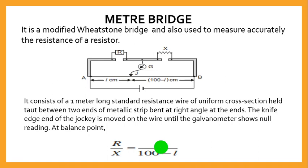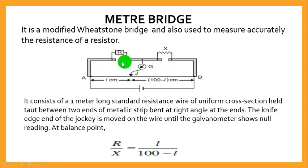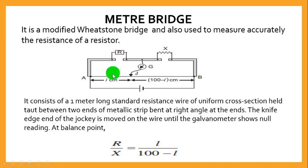The third instrument is the Meter Bridge. Its main diagram resembles that of a potentiometer; however, it has a bridge at two places — the first and the second. Between them, we have a standard resistor of known value R, and on the other side, the unknown resistance X whose value we want to determine.